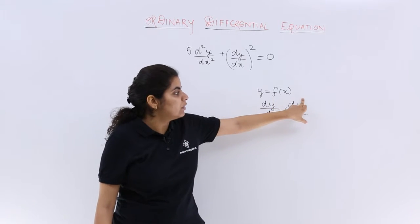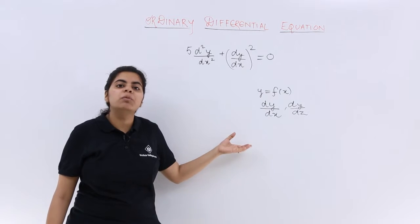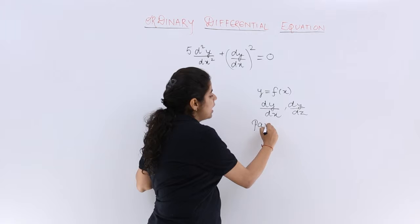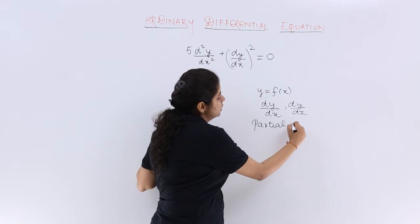That means there is only one dependent variable but more than one independent variable. That would be known as your partial differential equation.